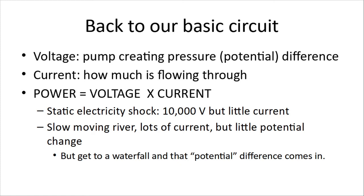Think of a river — a slow-moving river has lots and lots of current but very little potential change. You can swim in there, go against the current, canoe upriver and you're fine. Lots of power, but very low pressure — low voltage. Now if we suddenly get to a waterfall, we get a much bigger potential difference for the same current, and you don't want your canoe to be on there.